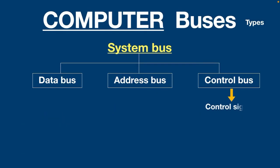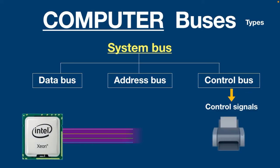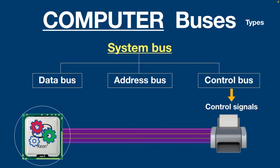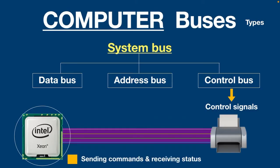The control bus carries the control signals that make sure everything is flowing smoothly from one component to another. The CPU contains a control unit which controls the functioning of all other components connected to the computer. It always monitors the system — without any control, the computer wouldn't be able to determine when data is sent and received. The control bus is particularly used by the CPU to communicate with devices, sending commands and receiving status signals.